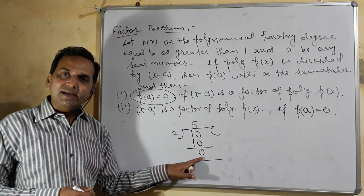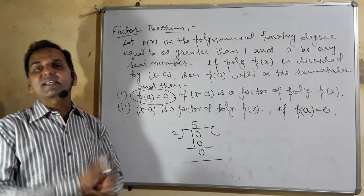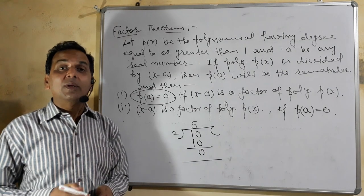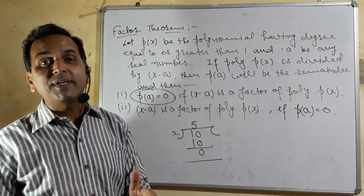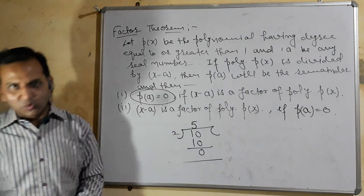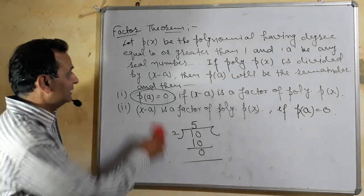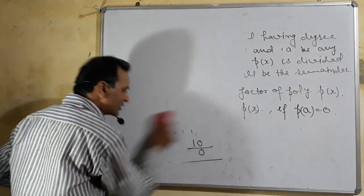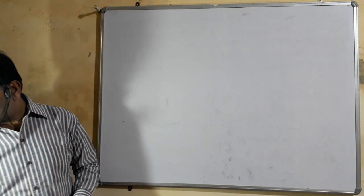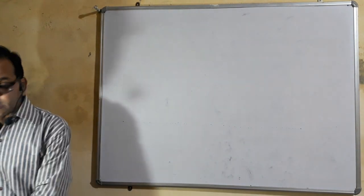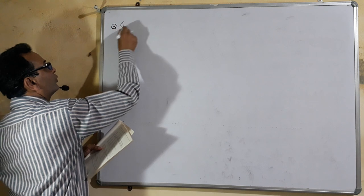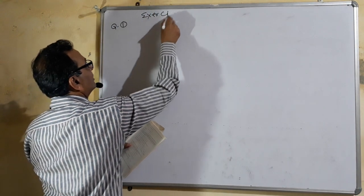This is our Factor Theorem statement: if remainder is 0, divisor will be called a factor. In the questions, you have to do the same. Exercise 2.4, Question 1, Question 2, and also Question 3 of Exercise 2.3 — all follow the same method. Now let's start Exercise 2.4. Let's look at Question 1, Part 3.